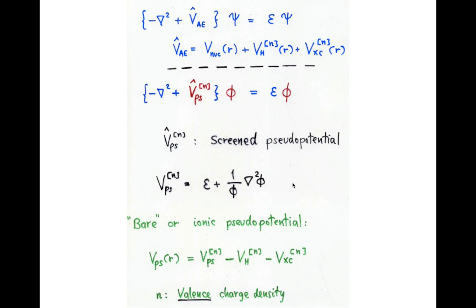and all that's left to be done is to unscreen the pseudo potential by taking out the Hartree screening and the exchange and correlation screening in this case also. Here, n is the valence charge density. There are some minor complications with this,